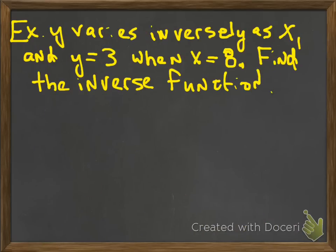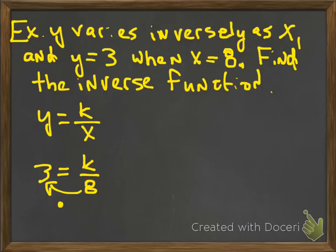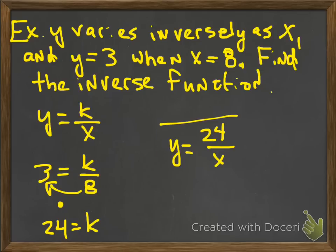Okay, so here's an example. Y varies inversely as x, and y is equal to 3 when x is equal to 8. Find the inverse function. So again, just with the words varies inversely, I know I'm saying y is equal to k divided by x. Now give me some numbers. So I'm going to plug them in where they belong: 3 in place of the y, 8 in place of the x. How do you get rid of divide? You multiply. So all you've got to do is multiply 8 times 3. And there's your k, k is equal to 24. So from there, I can say put the 24 in place of the k, and I now have a specific equation of y is equal to 24 over x.